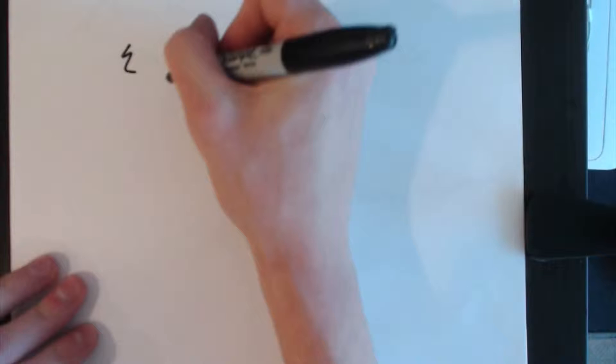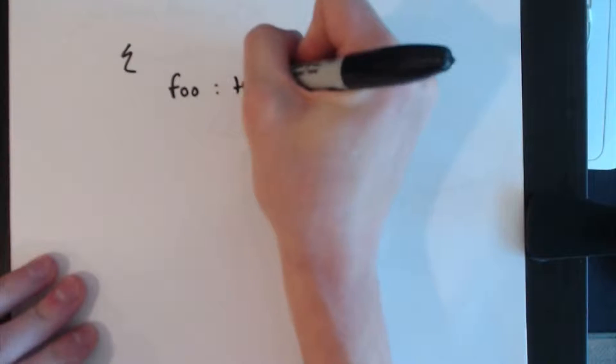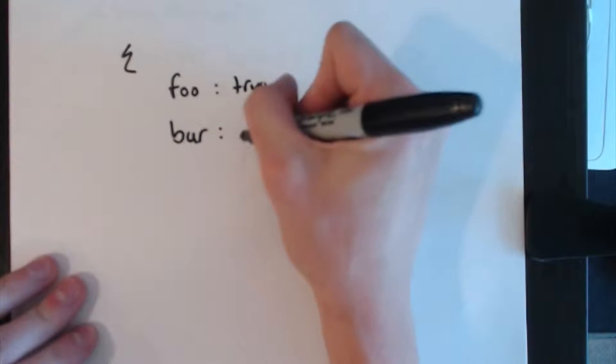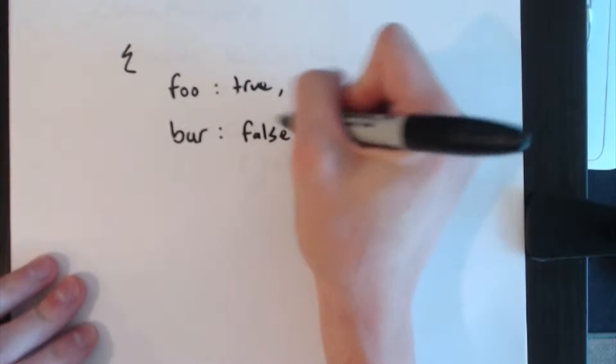So what happens if you have a context value that is an object like this? This is your state manager's state that gets put on the context value and it has a property called foo that's true and bar that's false.